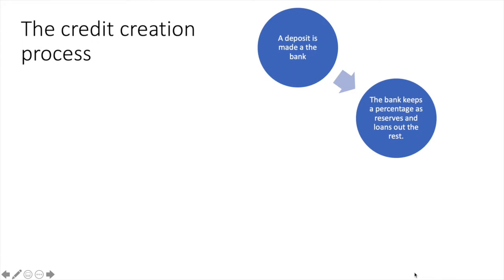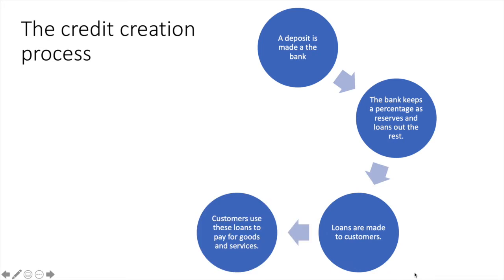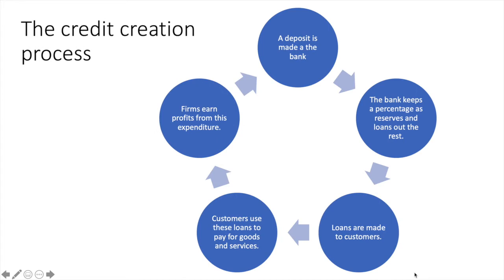The remaining amount can be used by the bank to make loans. Customers use these loans to pay for goods and services such as cars and homes. Firms earn profit from this expenditure and this money eventually finds itself deposited into the banking system again, and the process continues.